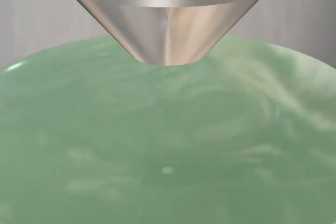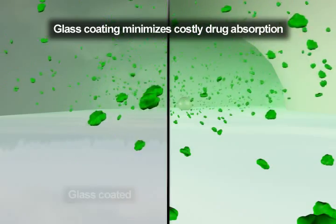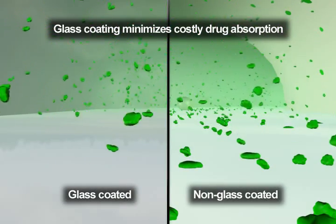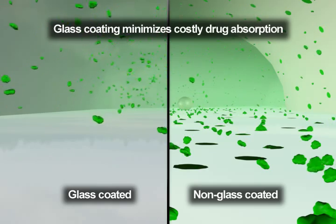A big advantage of the Q-Plate is the glass surface of the extracellular solution tunnels. Test compounds are less likely to stick to glass surfaces compared to plastic surfaces, and this leads to more accurate dose-response experimental results.